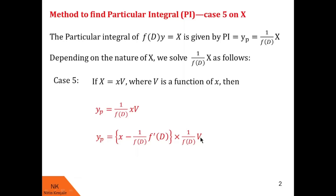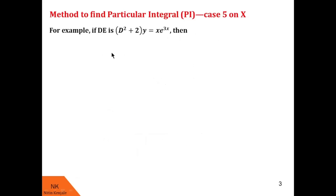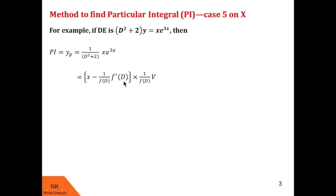Let us understand this concept with the help of an example. If the differential equation is given by (D² + 2)y = x·e^(3x), then the corresponding particular integral yp is given by 1/(D² + 2) of x·e^(3x). Here a is 3. Note that this RHS looks like x·v where v is a function of x. To find this 1/f(D) of x·v, we use the formula: x minus 1/f(D) times f'(D) times 1/f(D) of v, where v is e^(3x).